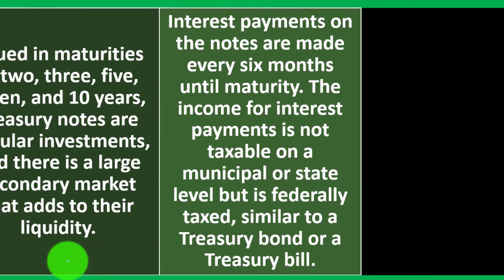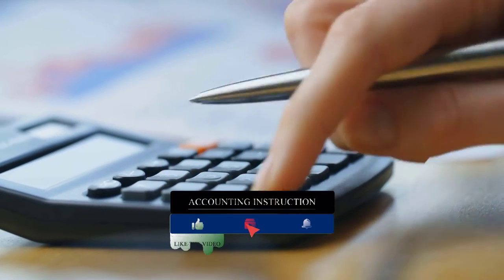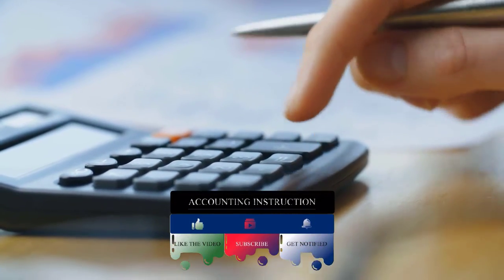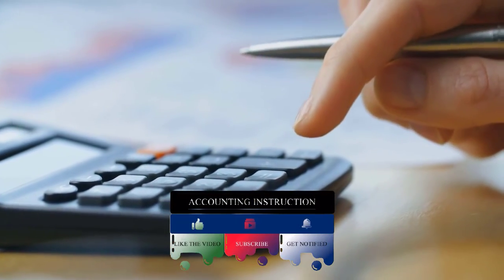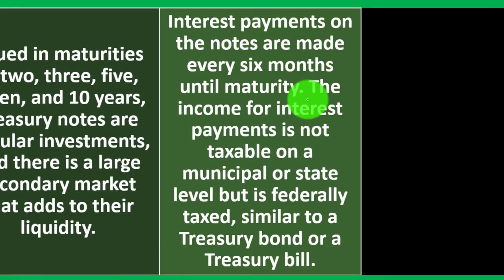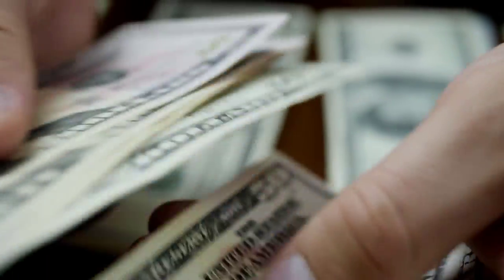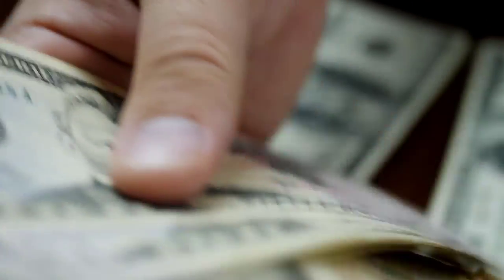Interest payments on the notes are made every six months until maturity. You can think of it like paying rent on an apartment monthly — here, the interest payments, which is the rent on the loan, are made every six months. At the end of maturity, we get the initial amount back — kind of like getting the rental property back and recovering the money we invested or loaned.